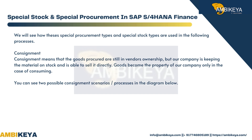Consignment means that the goods procured are still in the vendor's ownership, but our company is keeping the material on stock and is able to sell it directly. Goods become the property of our company only in the case of consuming. You can see two possible consignment scenarios in the diagram below.